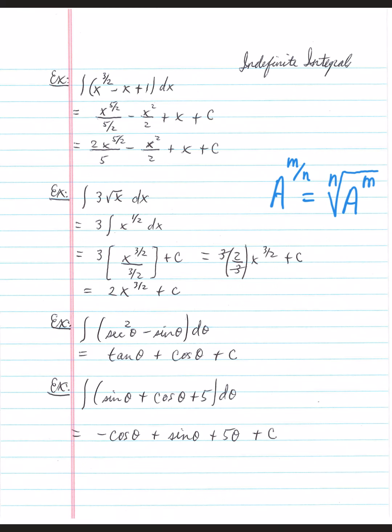Next example, the anti-derivative of sine is negative cosine theta. The anti-derivative of cosine theta is just straight up sine theta. Third term, the anti-derivative of your constant is the constant times the variable plus c.